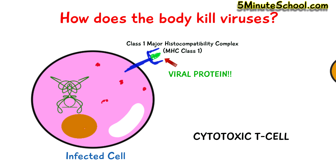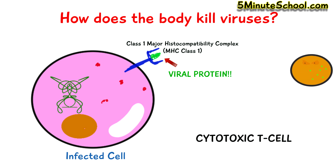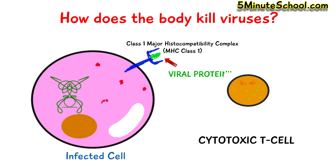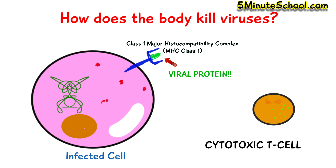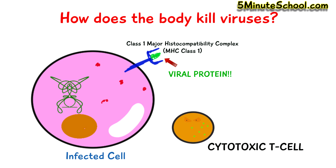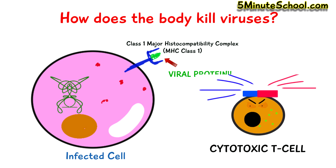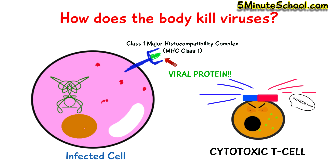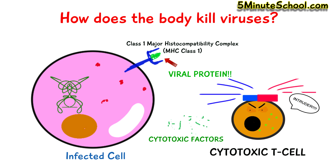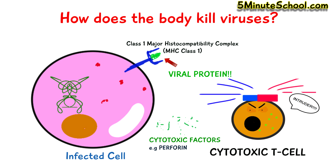T cells are a type of white blood cell, and one type is called the cytotoxic T cell. They circulate the body almost like a police car, checking if the proteins presented on these MHC receptors are the right ones. If a cytotoxic T cell detects a viral protein, it starts to release cytotoxic factors stored in granules — toxic substances which degrade and break down the cell. An example is perforin, which makes holes in the cell.